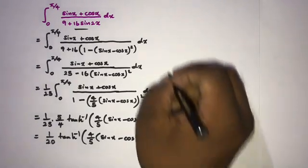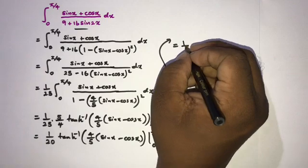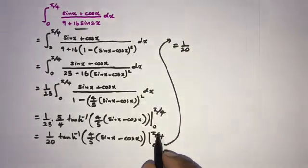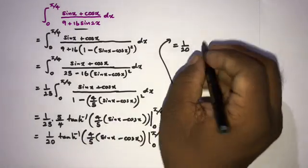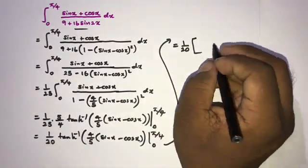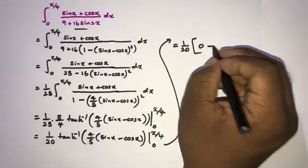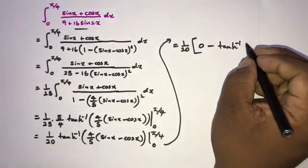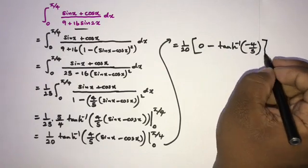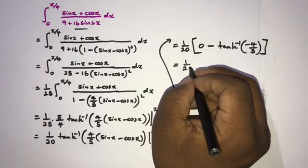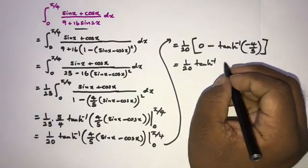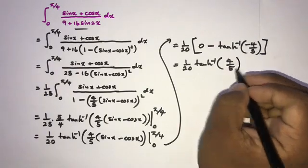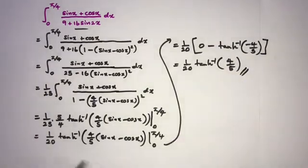Now we plug in the limits. At x = π/4: sin(π/4) − cos(π/4) = 0, so arctanh(0) = 0. At x = 0: we get arctanh(−4/5), and since arctanh is odd, this equals −arctanh(4/5). Therefore the result is (1/20)·(0 − (−arctanh(4/5))) = (1/20)·arctanh(4/5). We are done, and we didn't use any u-substitution. If you liked this video, please subscribe to this channel. Thank you for watching.